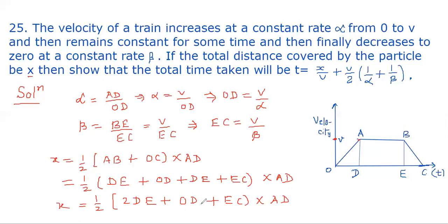We can put OD = v/alpha, EC = v/beta, and AD = v. So we get x = (1/2)(2DE + v/alpha + v/beta) times v.